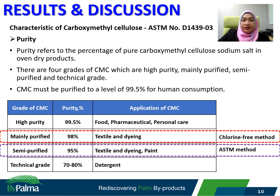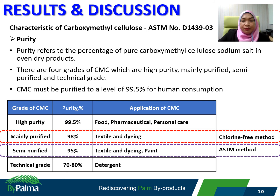Purity is one of the important criteria to determine the grade of CMC. Purity refers to the percentage of pure carboxymethyl cellulose sodium salt in oven-dried products. There are four types or grades of CMC: high purity, mainly purified, semi-purified, and technical grade, categorized by their purity percentage.